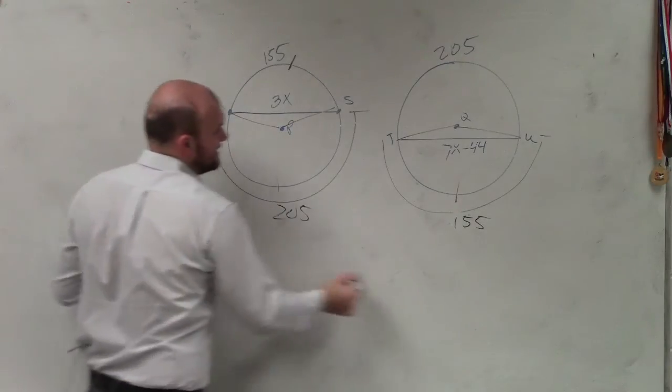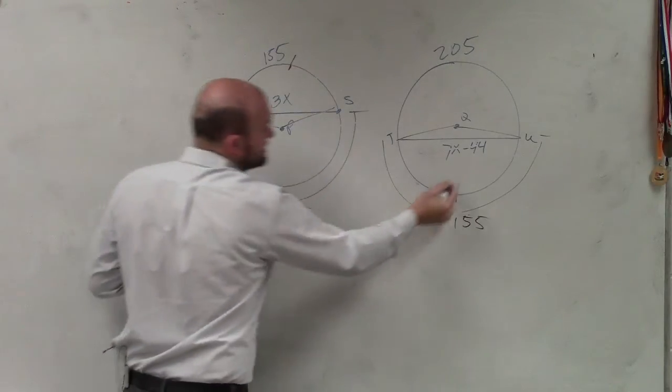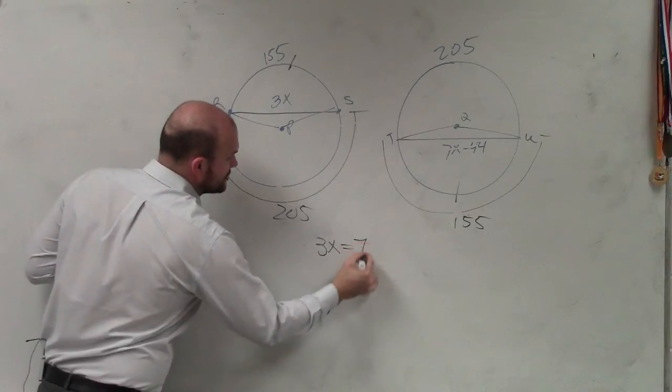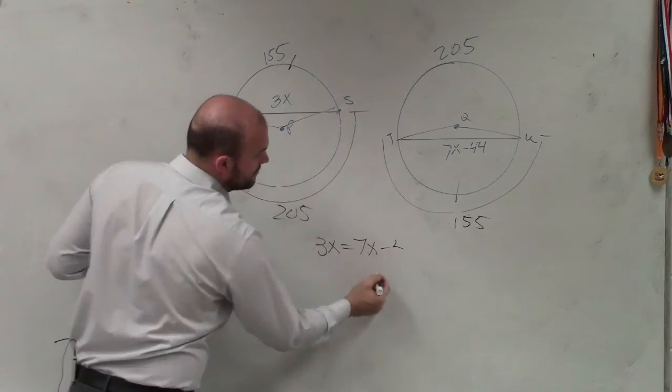So therefore, if that one is equal to that one, then yes, we can say that 3x is equal to 7x minus 44.